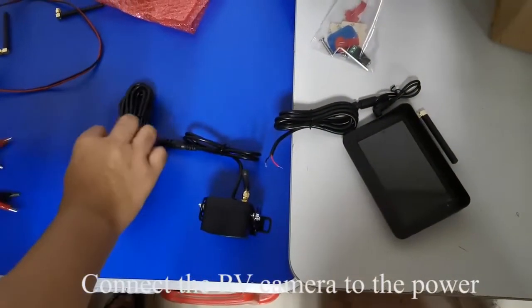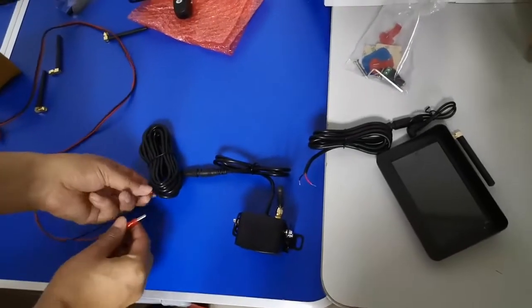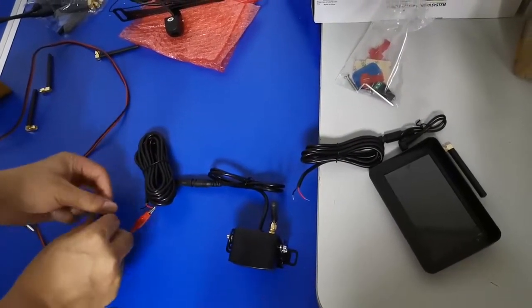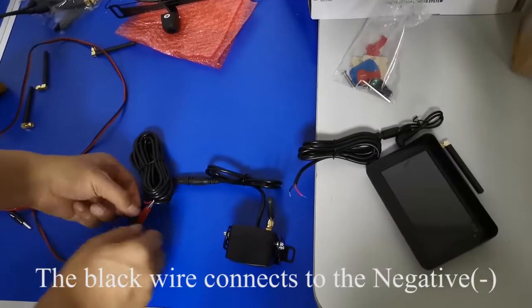Connect the camera to the power. The red wire connects to the positive plus. The black wire connects to the negative.